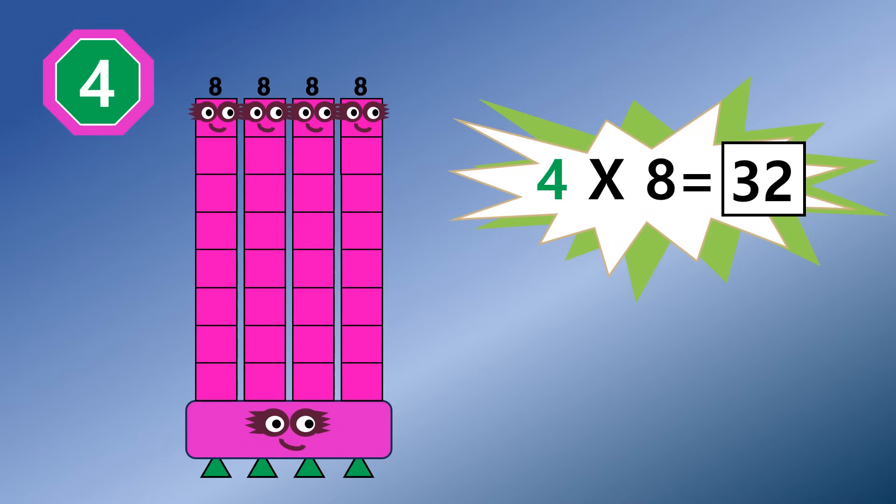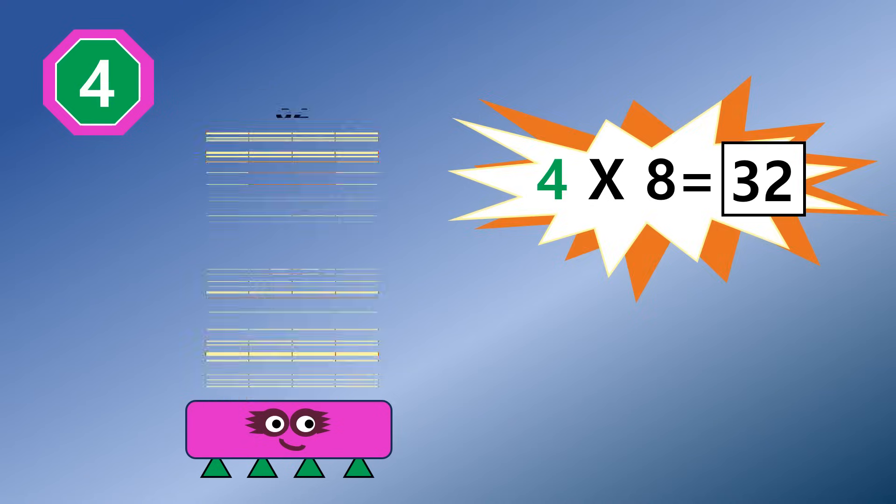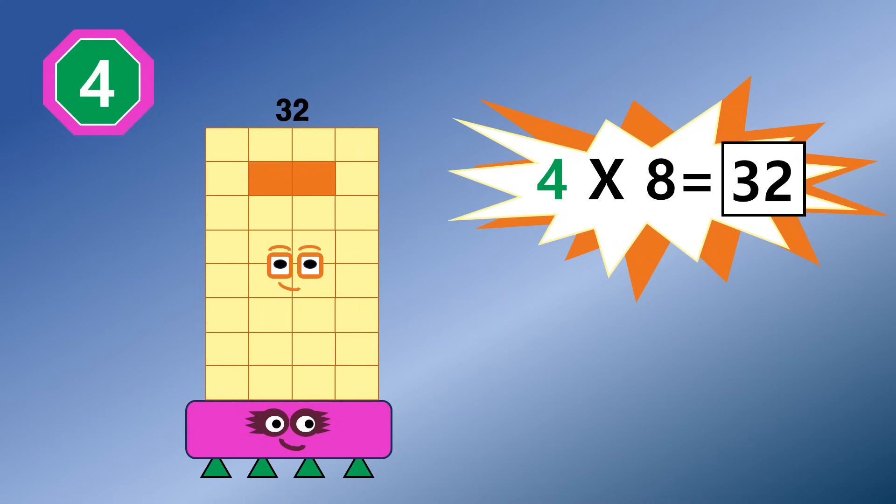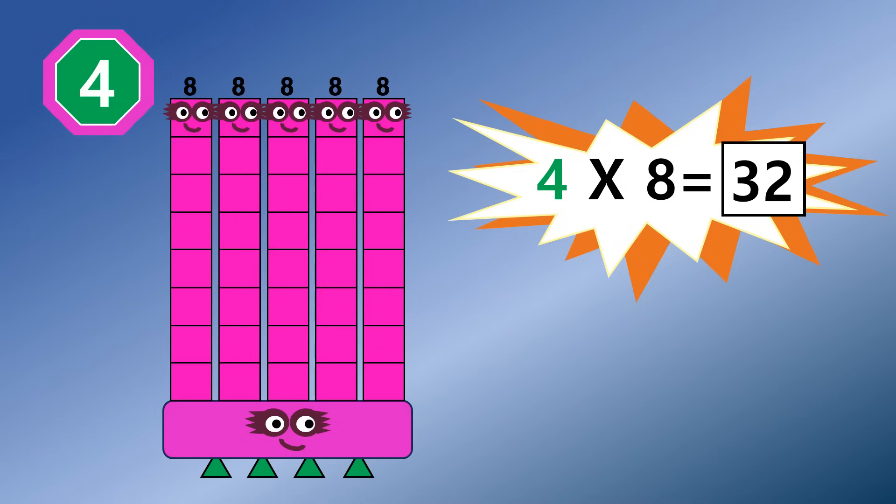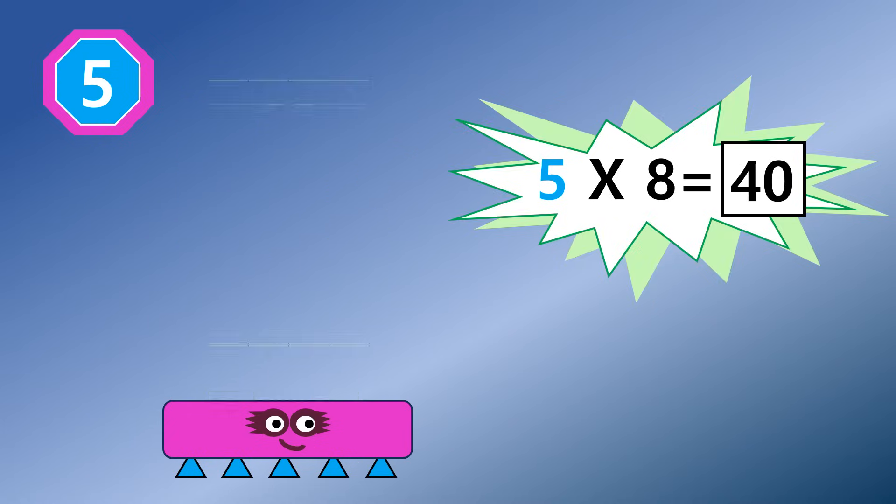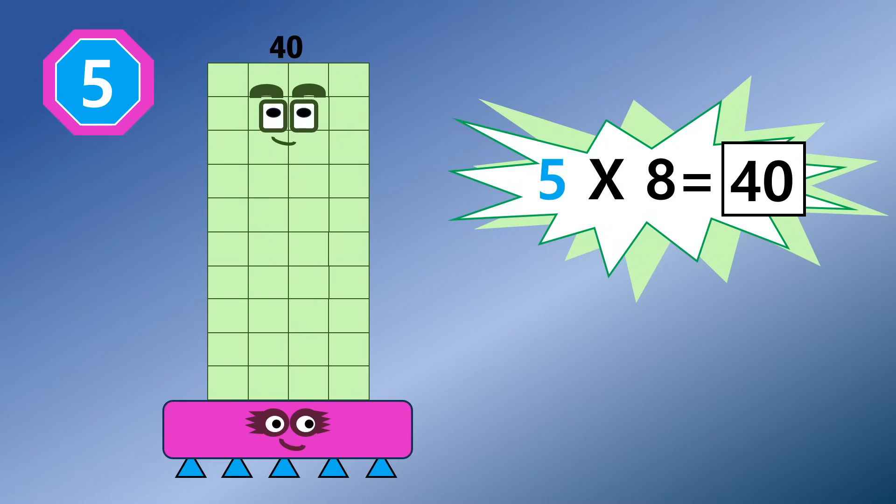Four 8 are 32. Super Doubler. Five 8 are 40. We've reached halfway spectacular.